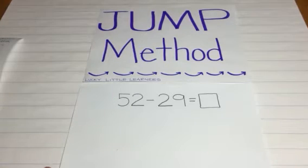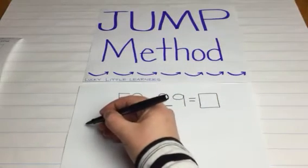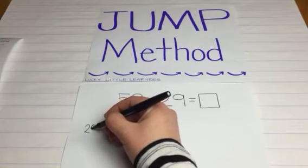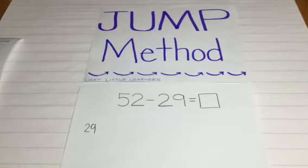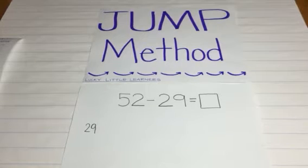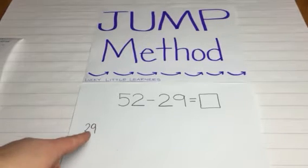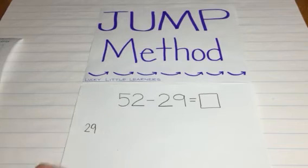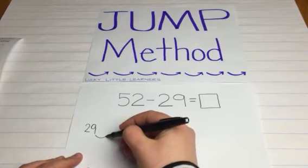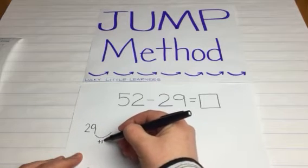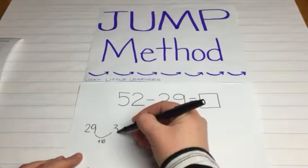we are going to start at 29. The object of this method is to see how many jumps or how many numbers need to get added on to 29 to get to 52. So if we start at 29, and the first jump we're going to do is a 10, 29 plus 10 will get us to 39.